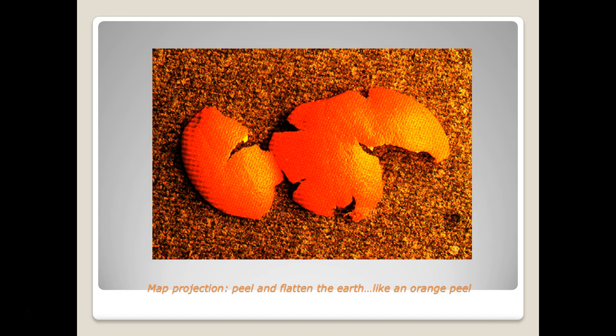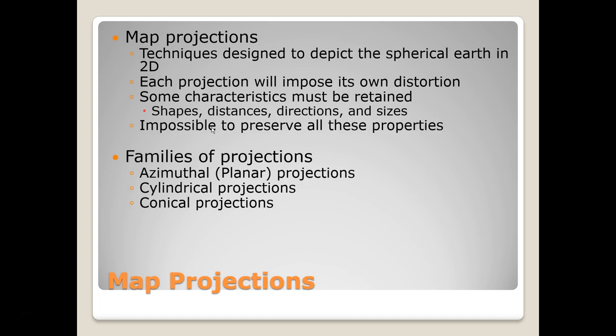We can think of it like an orange peel. An orange is a round object, and when we peel it out and flatten it, various things get distorted. We still know it's an orange peel, but there are various distortions — the length from one point to the other is different, the shape has changed, and the direction has changed.